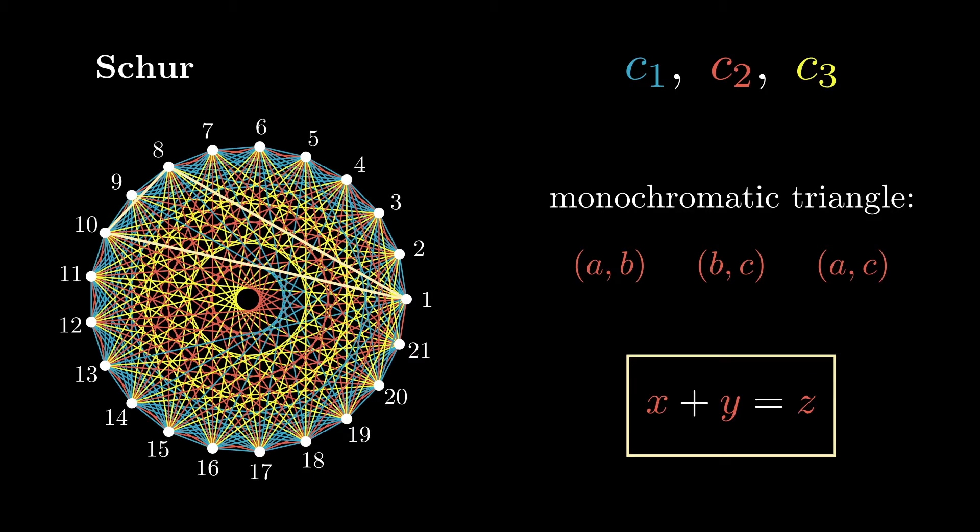We now get closer to Fermat by venturing through some group theory. Let's focus solely on the numbers between 1 and P-1 modulo P, where P is any prime number. Rather than write A congruent to B mod P in this way, I'll use the following abbreviation to avoid cluttering the screen.